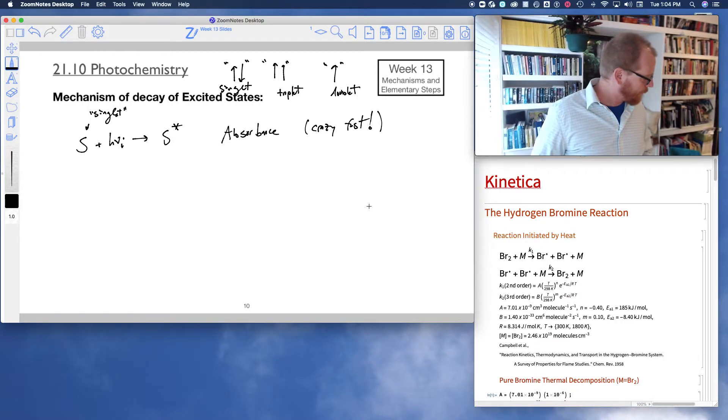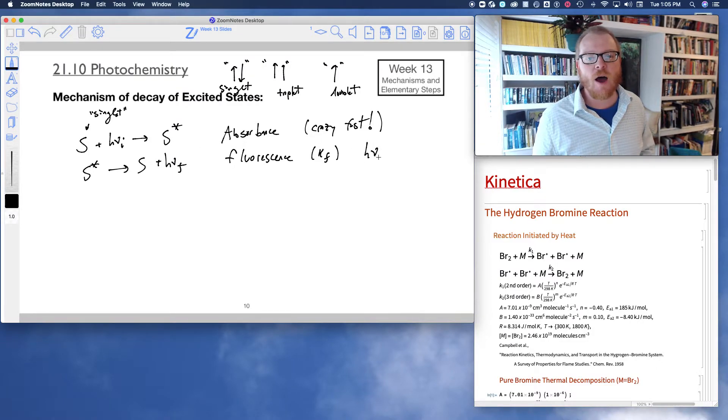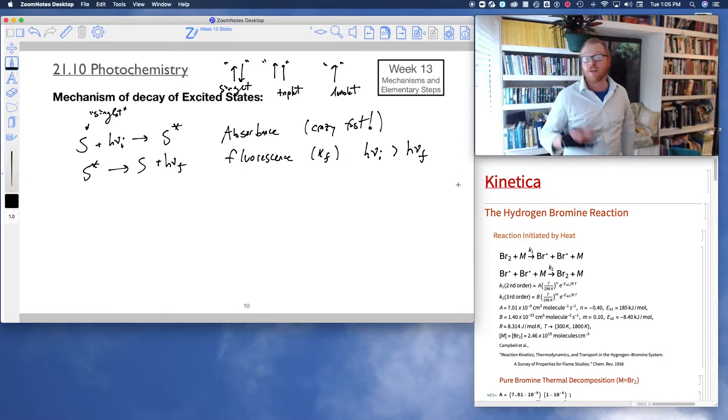And now we see the decay. So another possibility is this excited state could decay just back down to the ground state and emit light as a result at some different frequency. And we call that fluorescence. I'll say that happens with rate constant KF. And here, this is fluorescence because the product H nu I is greater in energy than the product H nu F. You have to use a more energetic photon for the absorbance, like a UV photon, and it will give off a visible photon, like a blue photon.